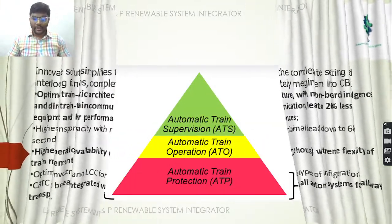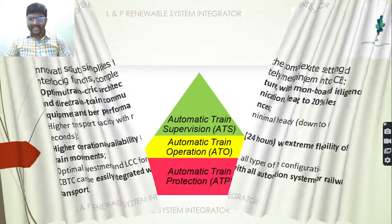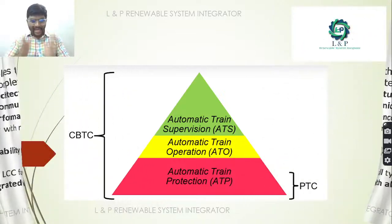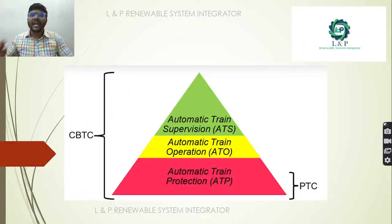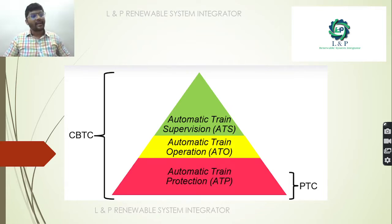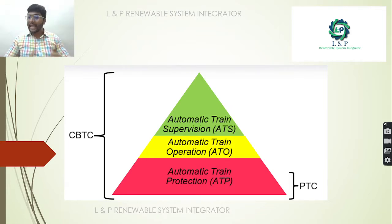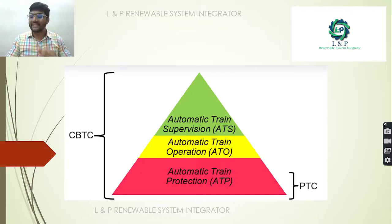Comparing CBTC with normal PTC: in PTC we have only Automatic Train Protection, whereas in CBTC we have ATP, ATO, and ATS.